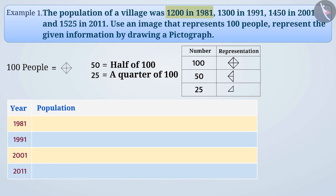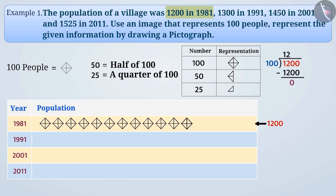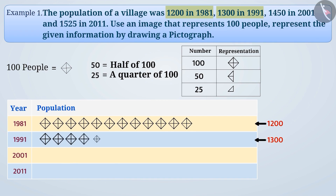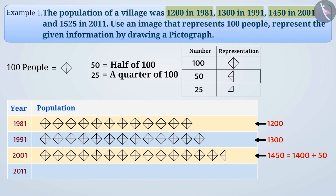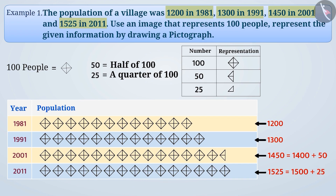In 1981 the population was 1,200. Since 1,200 divided by 100 equals 12 with remainder 0, we represent 1,200 by making 12 such images. Similarly, 1,300 is represented by 13 images. Since 1,450 equals 1,400 plus 50, we use 14 full images and one half image. Since 1,525 equals 1,500 plus 25, we use 15 full images and one quarter image. In this way we have represented the given information as a pictograph.